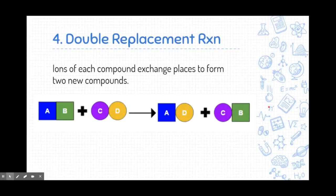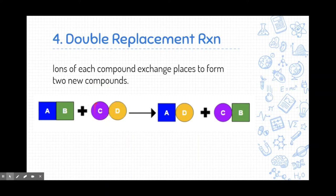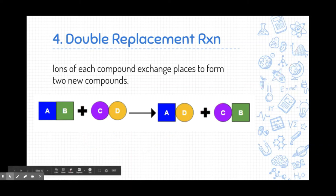The next type is double replacement reactions. This is similar to a single replacement reaction — think of a dance again — but this time we have two pairs of partners, and nobody is by themselves. We have A and B dancing, and C and D dancing, and they're just going to switch partners: A goes with D, and C goes with B.